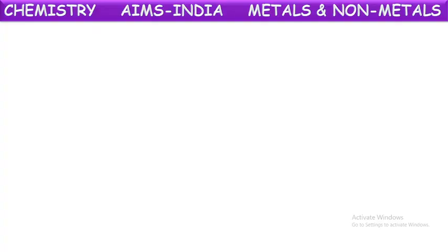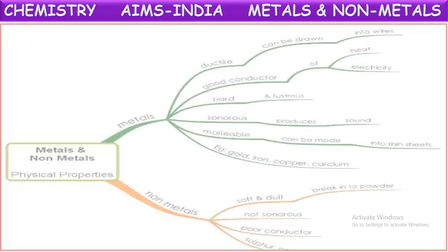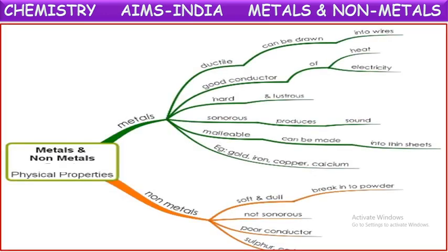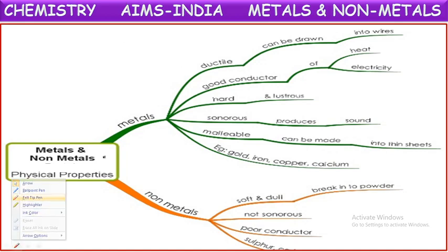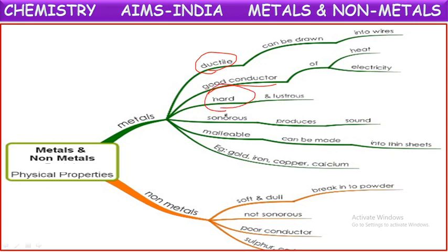Before attempting the assessment, let us have a glance at all these concepts once. First of all we will see the metals and nonmetals properties. Metals are ductile - they can be drawn into thin wires. Metals are good conductors of heat and electricity. Metals are hard solids. Metals are sonorous - they produce sound, and they are lustrous also - they are shiny.